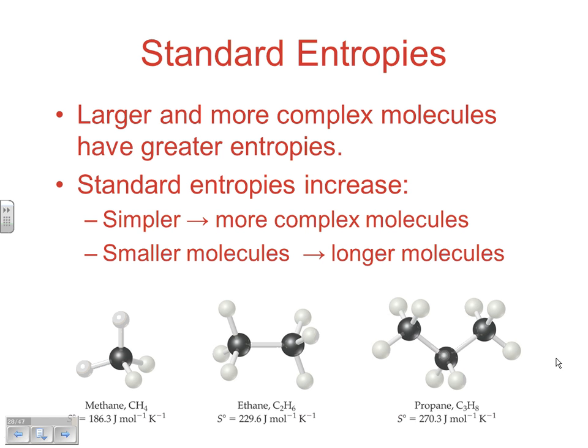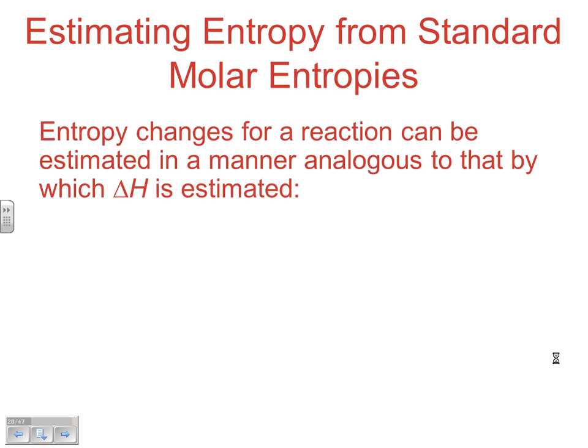You can see that here in these bottom values where the entropy is going from 186.3 for methane to 229.6 to 270.3. As our length of our alkane hydrocarbon is increasing, we're getting higher entropy values.